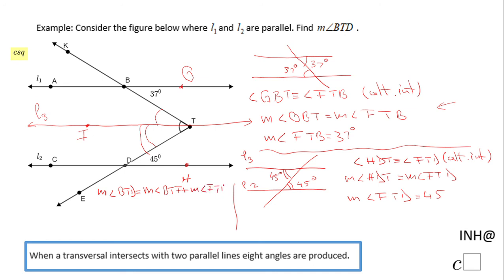So the last thing we need to do is to add these two values: 37 degrees and 45 degrees, and that will be 82 degrees. The measure of angle BTD is 82 degrees.